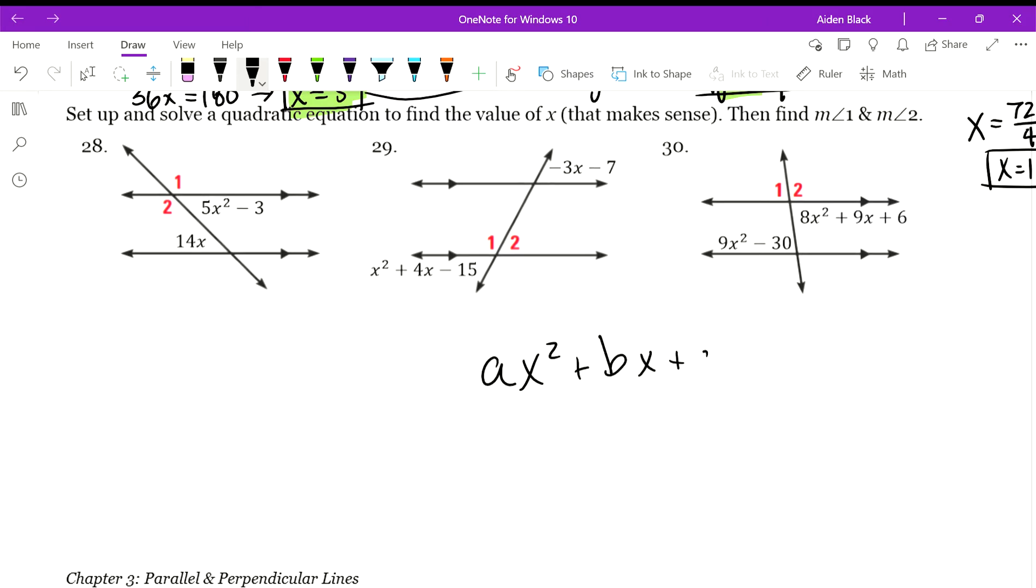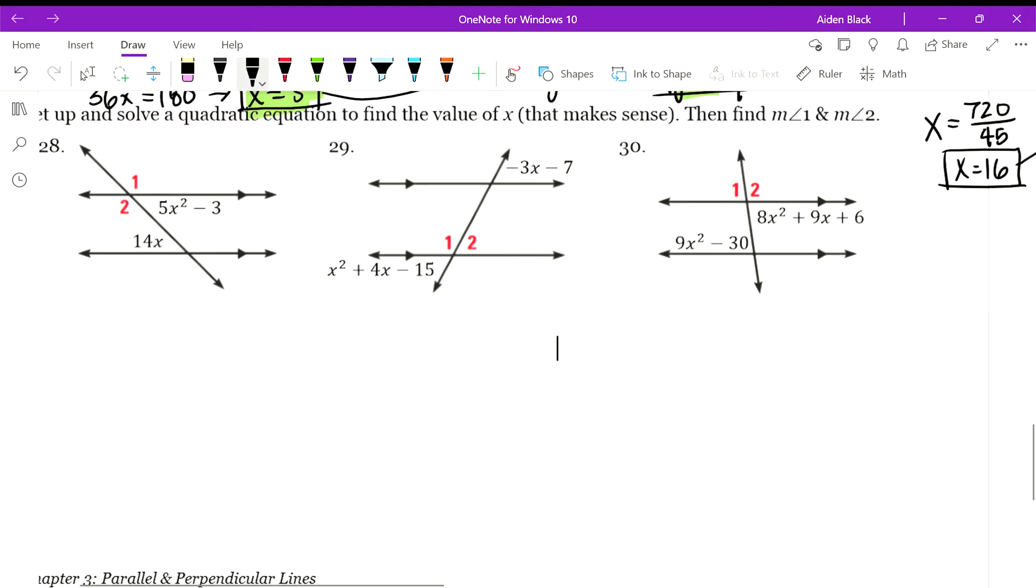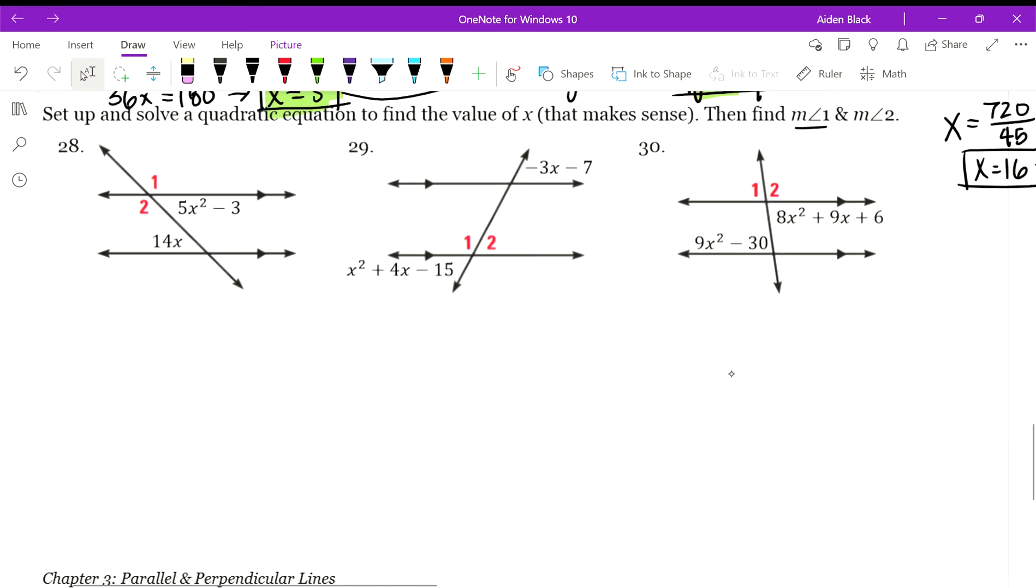A quadratic looks like this and you'll end up with x equals something and x equals something else. We'll find out that one of those when we plug it back in for x may give us a negative value, and we have yet to deal with negative angles, so that would not make sense. After we figure that out, then we can find the measure of angle 1 and the measure of angle 2.